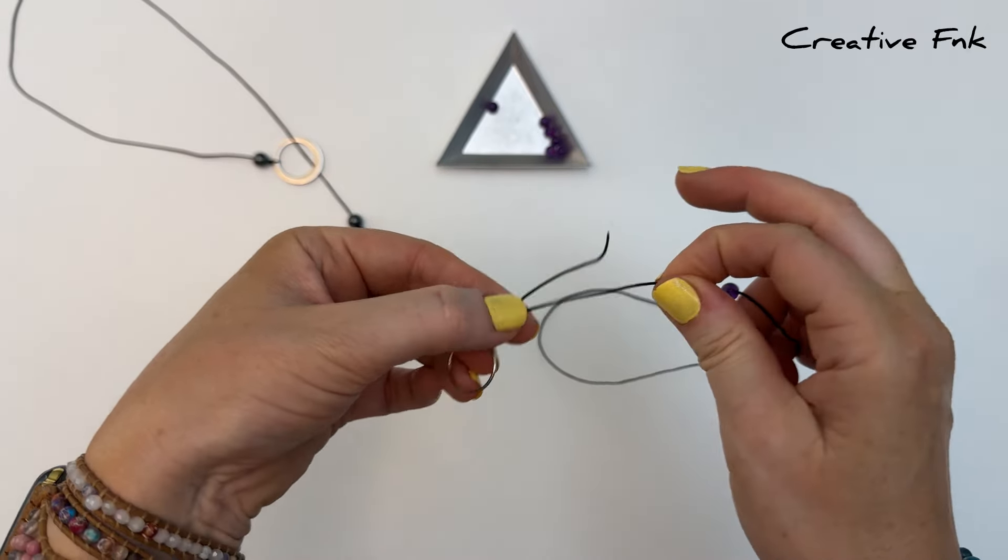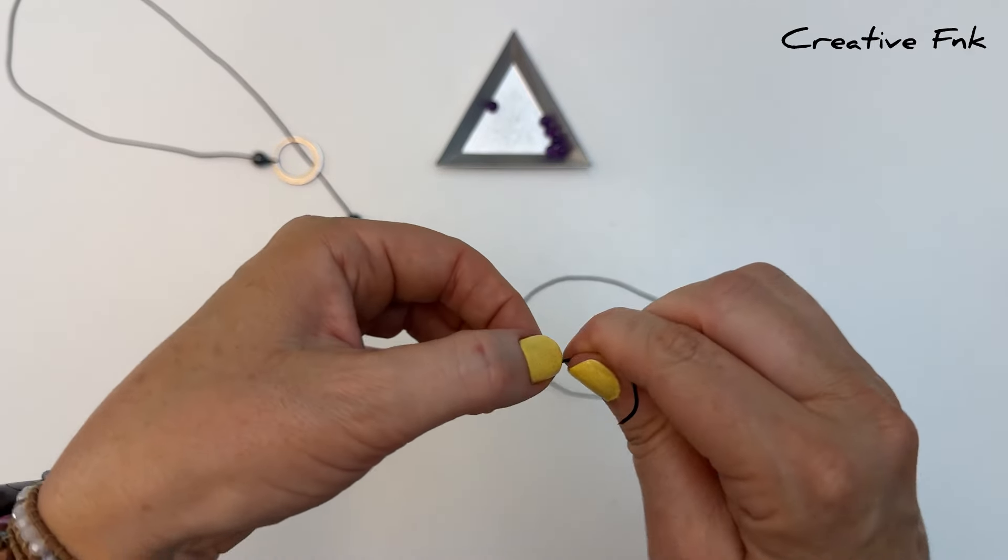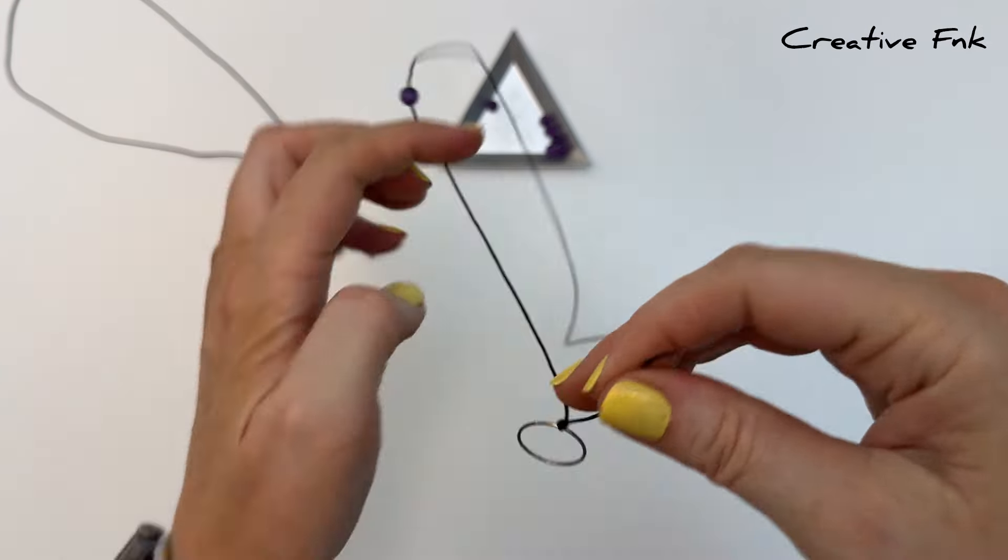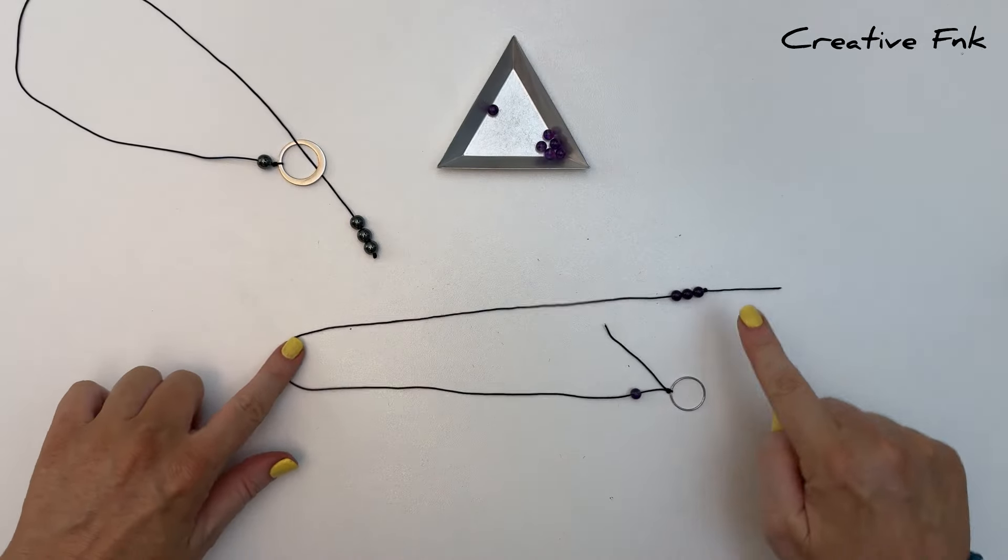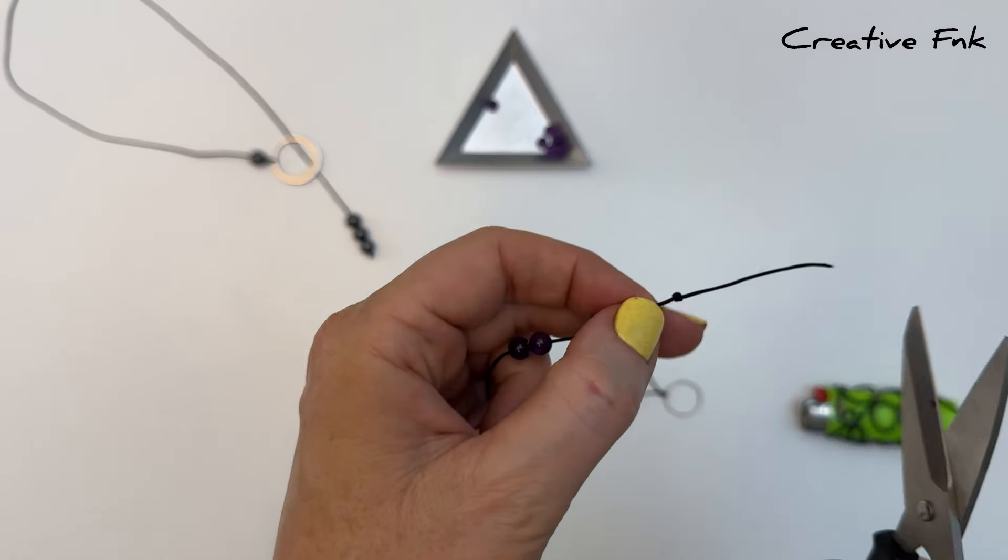Now you should be able to slide this little knot into position, so I just bring it right down on top of the ring, make sure it's really nice and tight. You can try your necklace on for size before you cut these tails off, but I find these measurements are about right for the type of thread that I use and the length of necklace that I like.